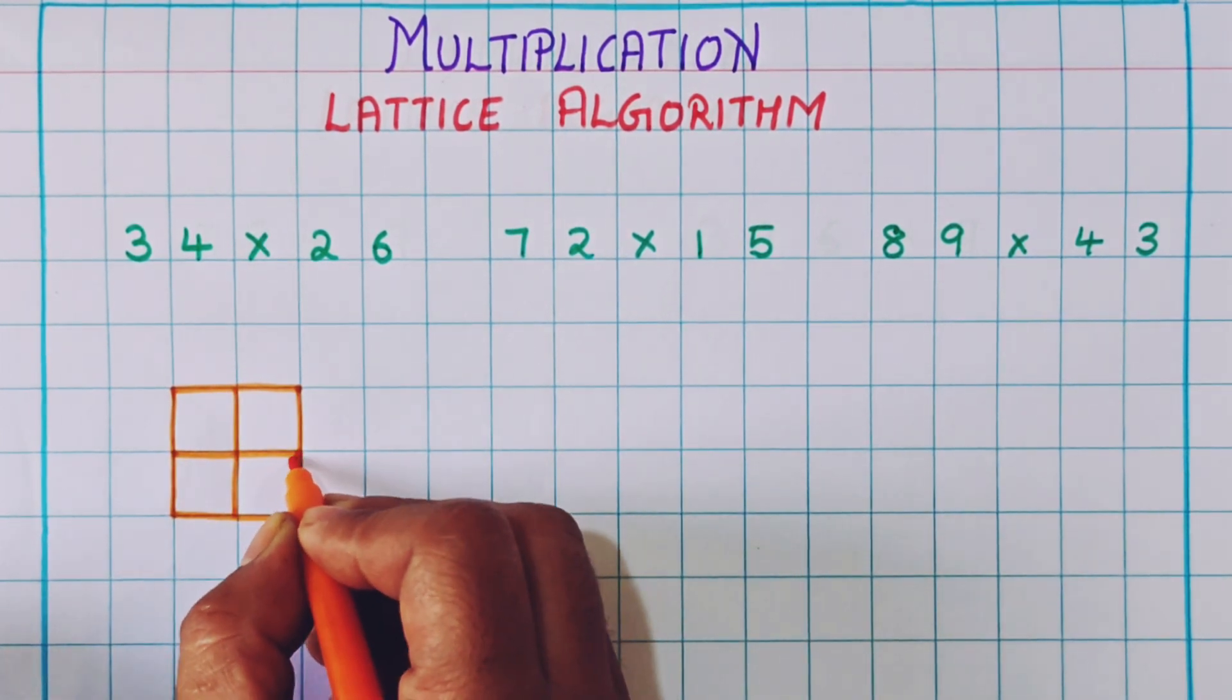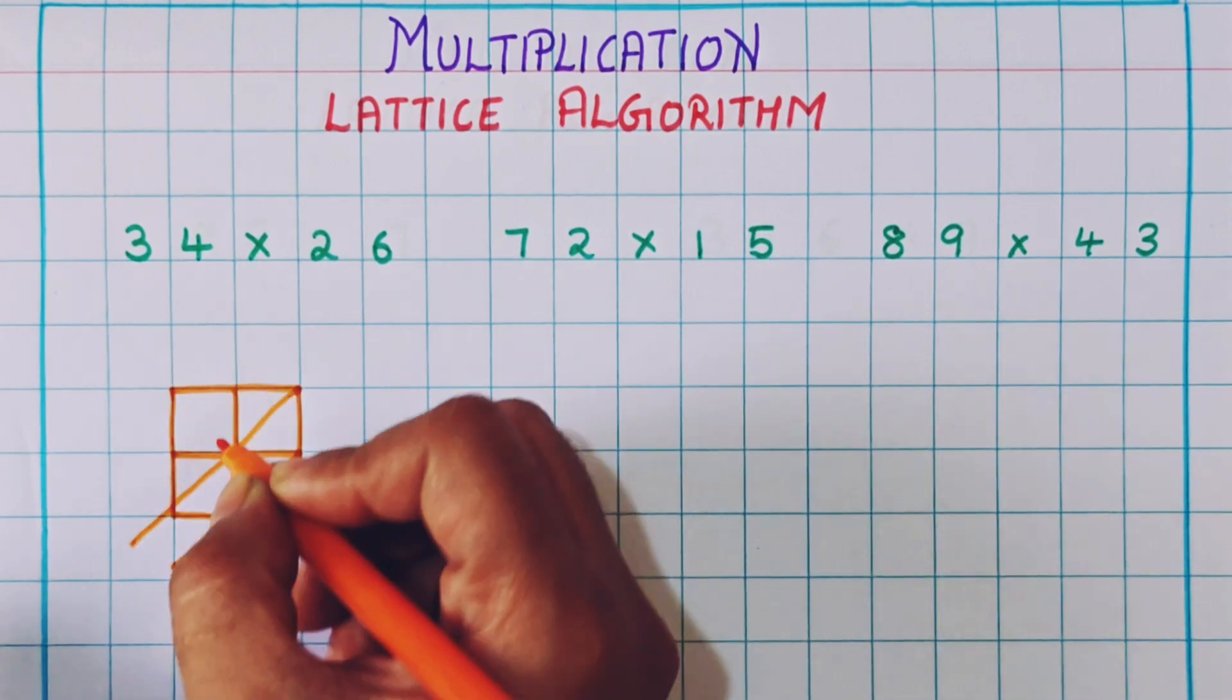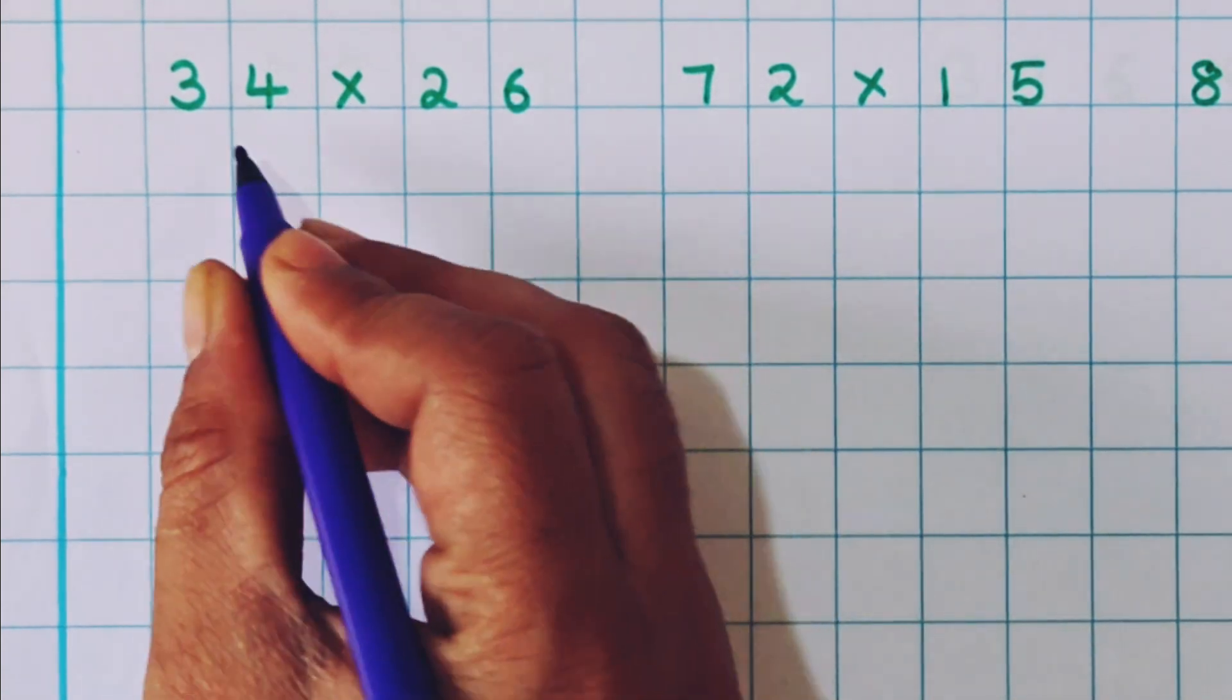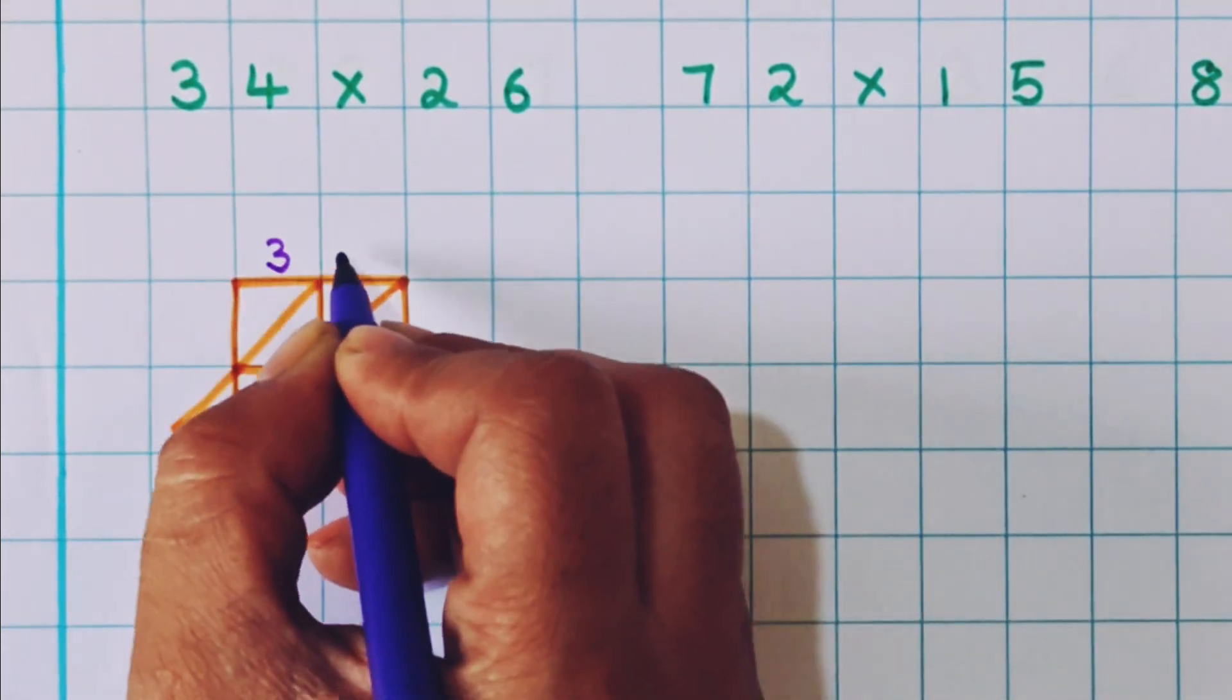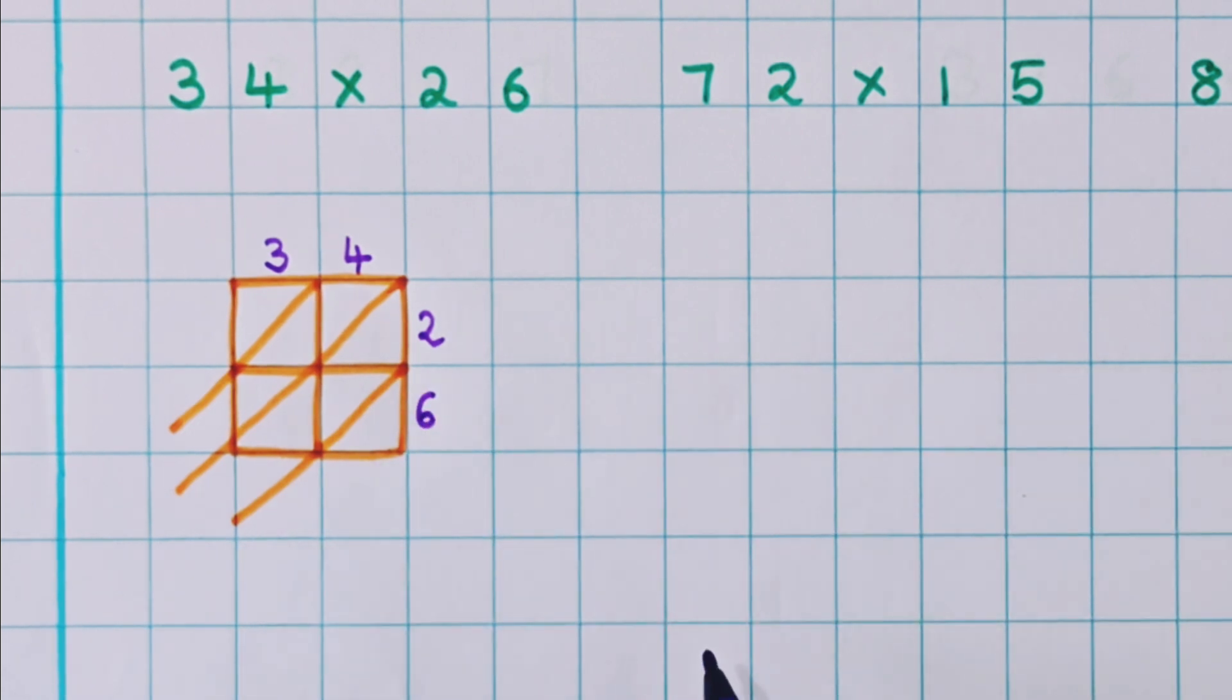Now after that make diagonal lines like this. After that make diagonal lines like this. Now let's write the numbers. Here 34 and right here 34 and here 26.